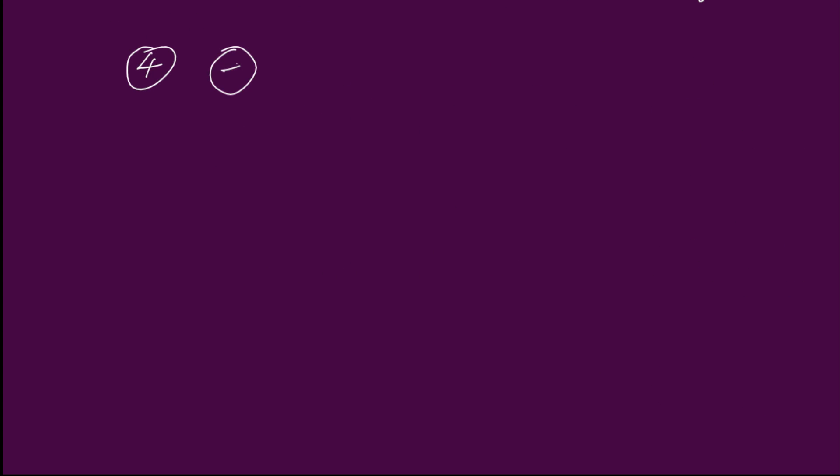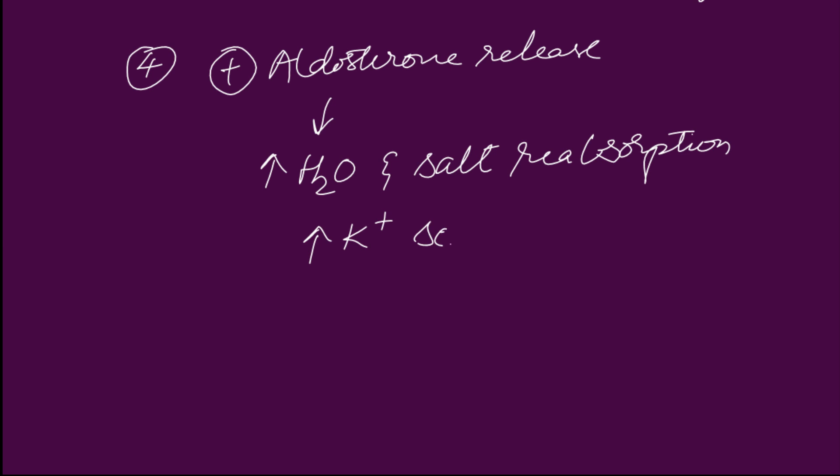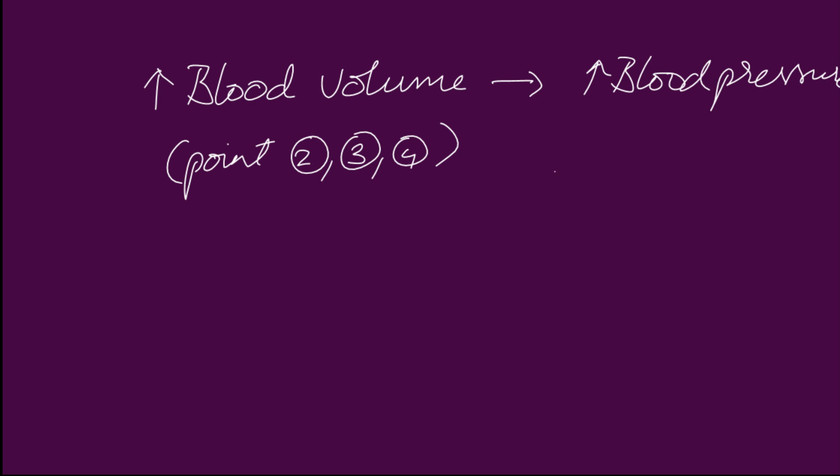Angiotensin 2 also increases aldosterone release, which increases salt and water reabsorption into the blood, increases potassium secretion, decreases urine output, and increases blood volume. With all these increases in blood volume, blood pressure increases.